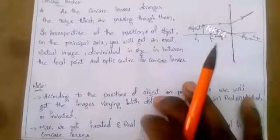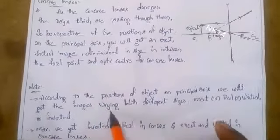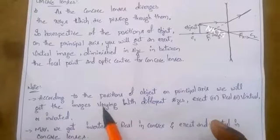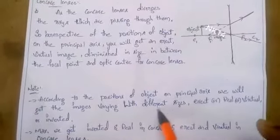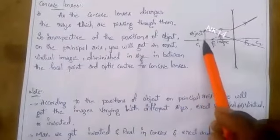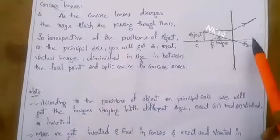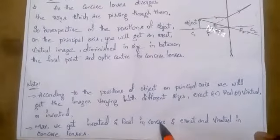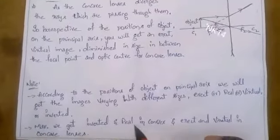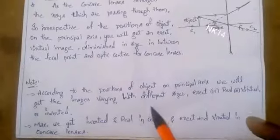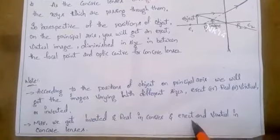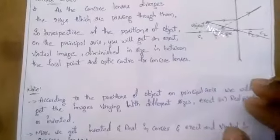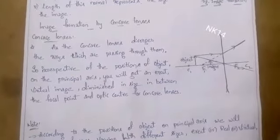As a note: according to the positions of the object on the principal axis, for a convex lens we get images varying with different sizes — erect or inverted, real or virtual. For a convex lens, we maximum get inverted and real images, and the size — whether diminished or enlarged — depends on the position of the object. For a concave lens, we always get erect and virtual images.